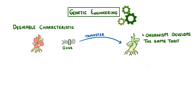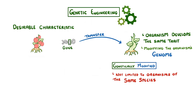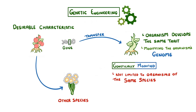Effectively, what we're doing is modifying the organism's genome by adding a new, helpful gene. And so we can call the organism genetically modified, or GM. We're not just limited to organisms of the same species, though. We can also use the genes of one species to genetically modify organisms of another species.